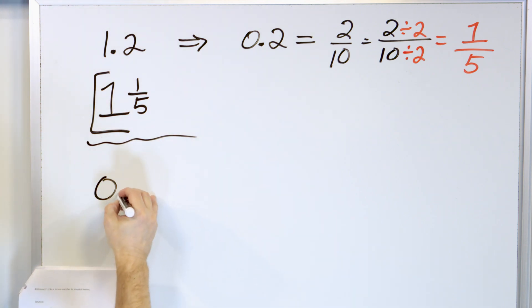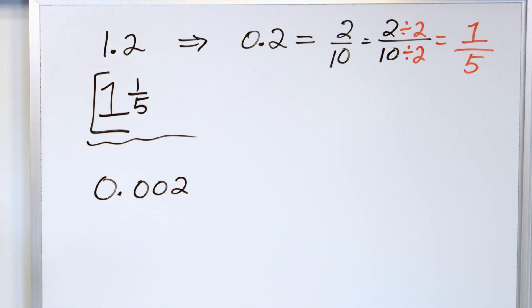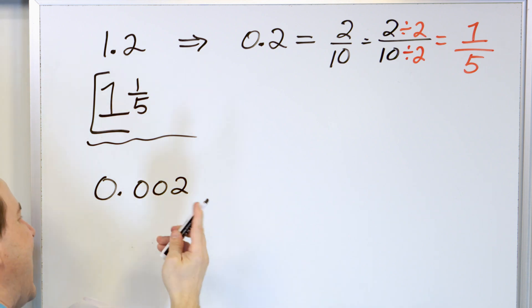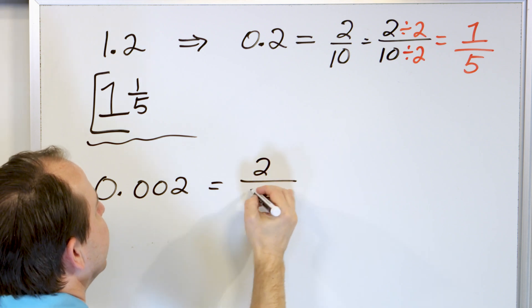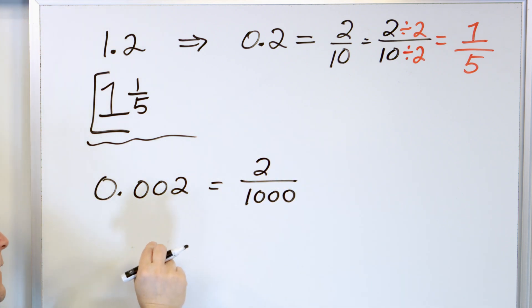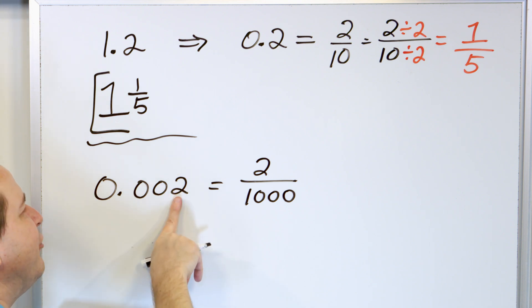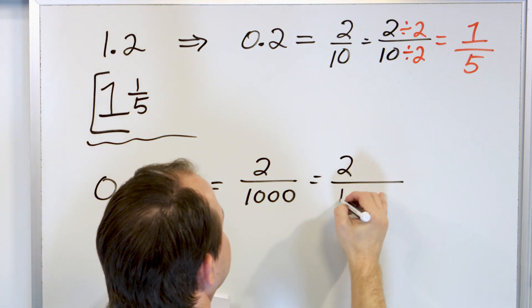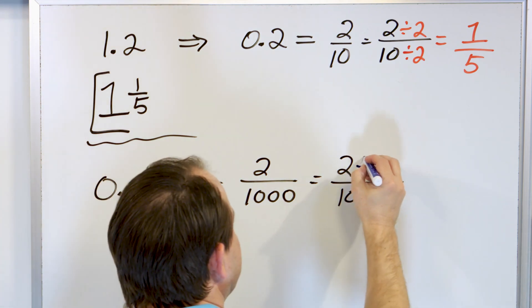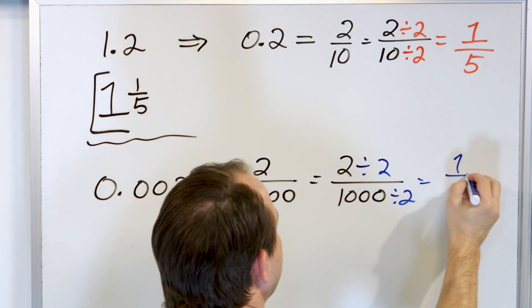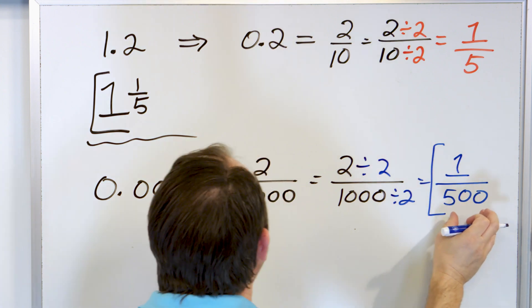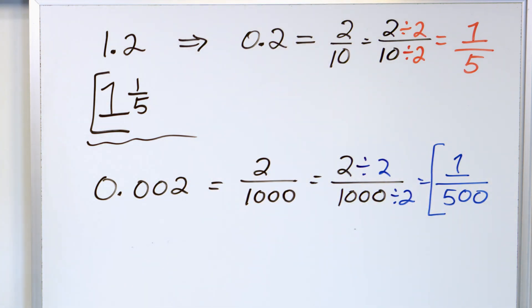Halfway done. Let's take a look at 0.002 — that is a decimal we're going to convert to a fraction. This is the tenths place, this is the hundredths place, and this is the thousandths place. So I have two in the thousandths place — two thousandths. Not two tenths, not two hundredths, but two thousandths: two over a thousand. To simplify, I can divide top and bottom by two, since they're both even. Two divided by two is one, and a thousand divided by two is five hundred. So the simplest fraction equal to 0.002 is one over five hundred.